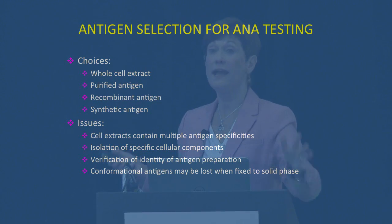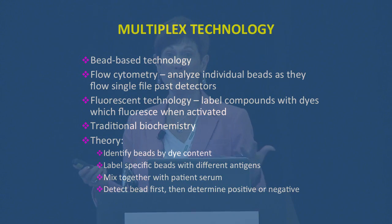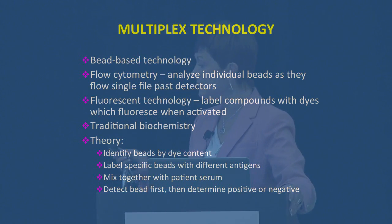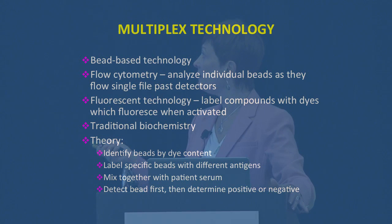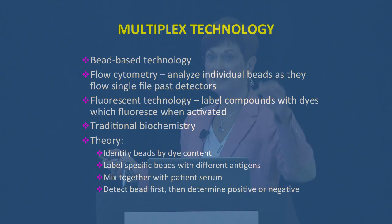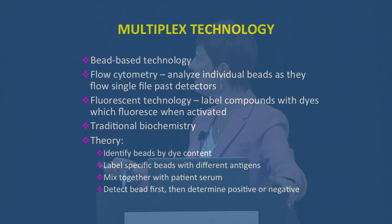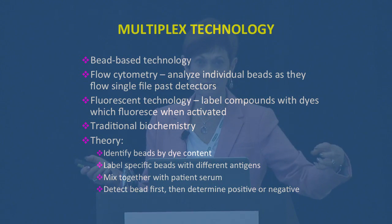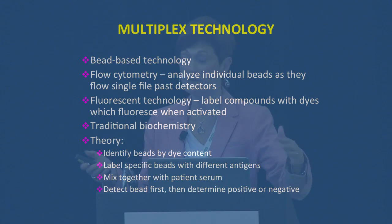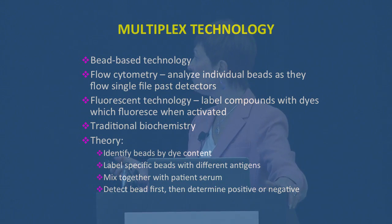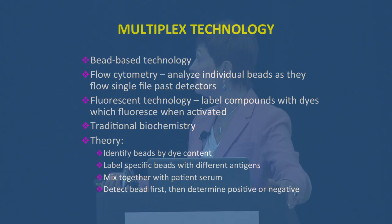What we have available now is multiplex technology, which some of you are already using. We've been using it since January of this year — about 10 months. It's a bead-based technology using 8-micron beads, combining several different methodologies in one. It's flow-based because you analyze individual beads passing single file through the detectors. It has fluorescent technology to identify the beads by their dye content and detect whether a sample is positive for a particular antibody. And then there's traditional antigen-antibody biochemistry. You identify beads by dye content, label each bead with a different antigen, mix them with the patient's serum, then detect the bead first and whether it's positive or negative.